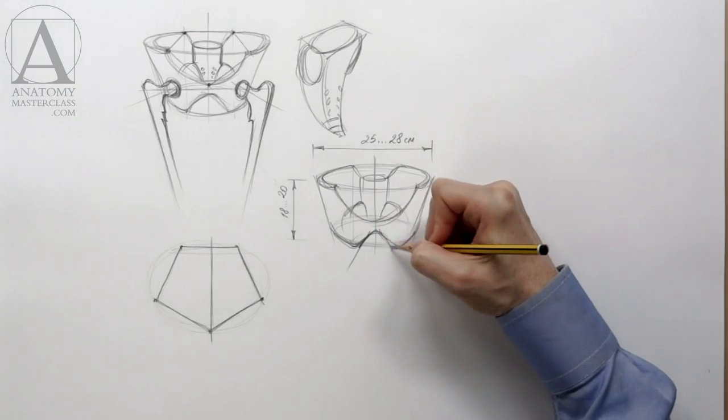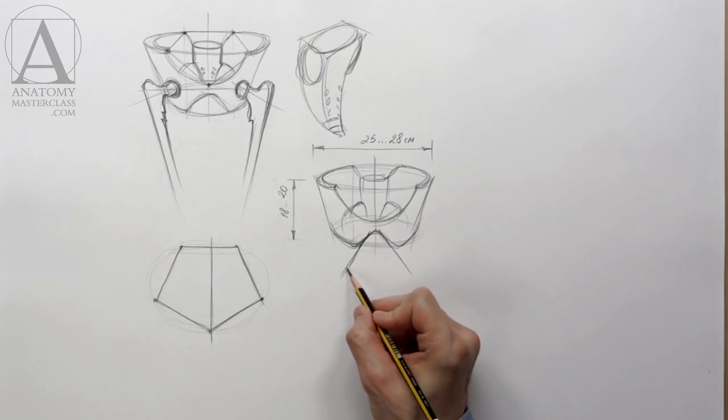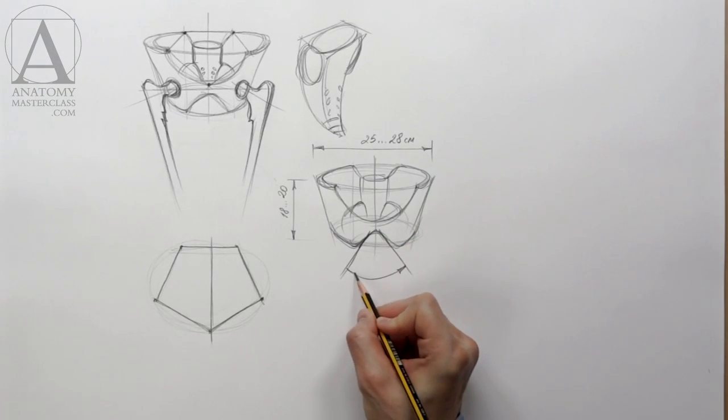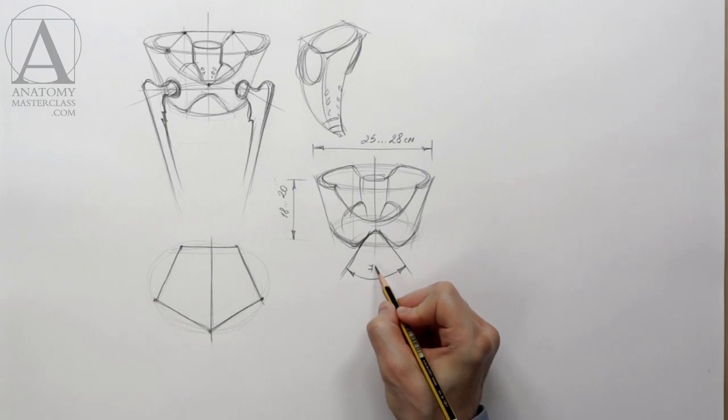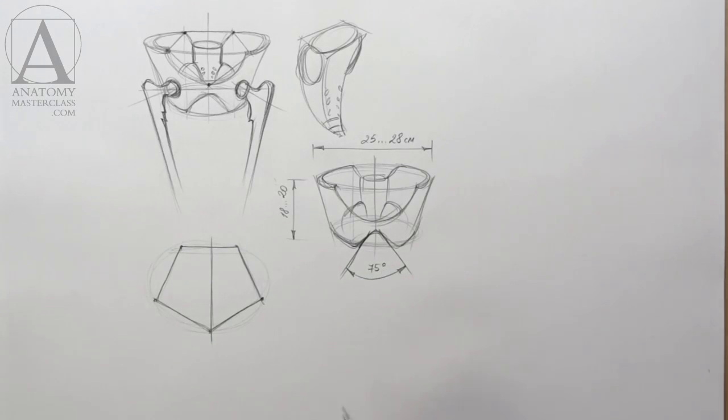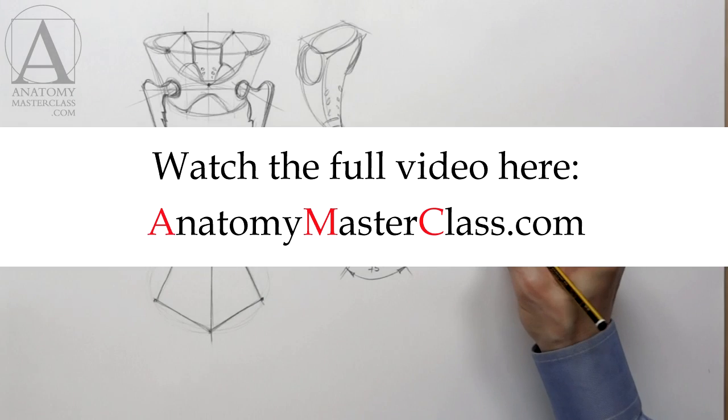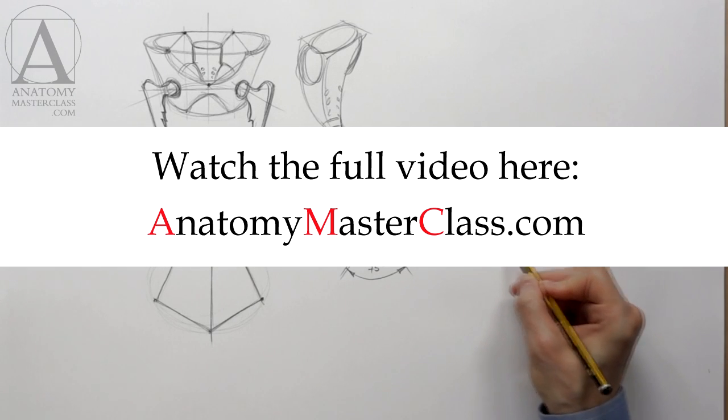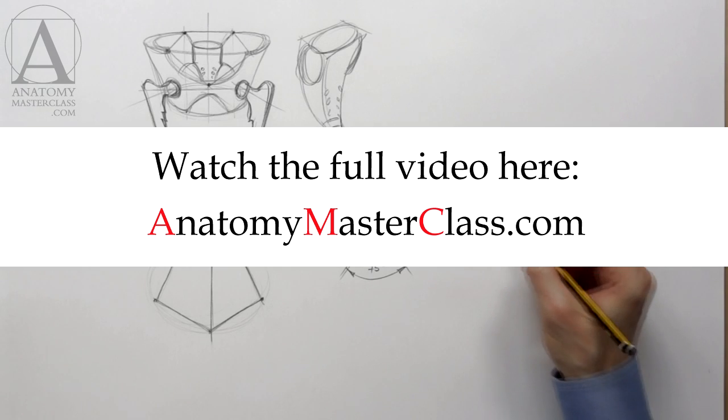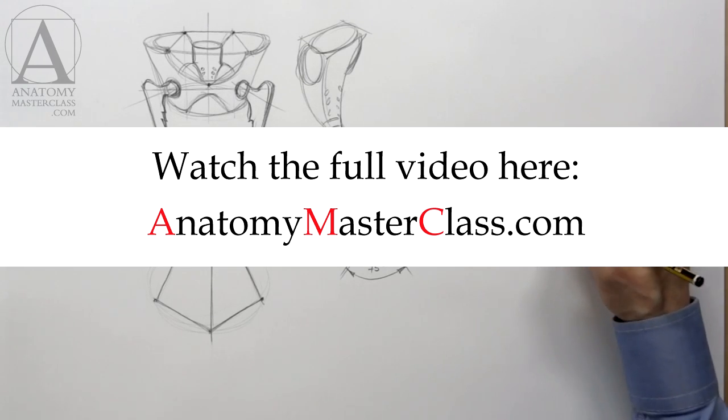There are some differences between a male and female pelvis. For example, in a male pelvis, the angle between the ischium bones is about 75 degrees. However, in a female pelvis, this angle is wider.